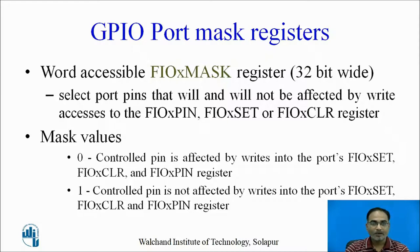The FastIO mask register is a word-accessible 32-bit wide register. It selects the port pins that will directly affect the values in the FastIO pin value register, FastIO set register, and FastIO clear register. If you write zero for any particular port pin, that control pin is affected by writings in FastIO set, FastIO clear, and FastIO pin value registers. If you write one, that control pin will not be affected by any writings in those registers.